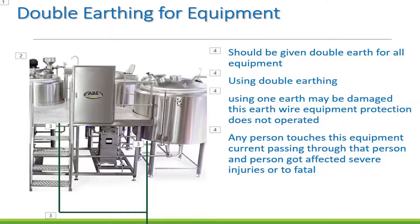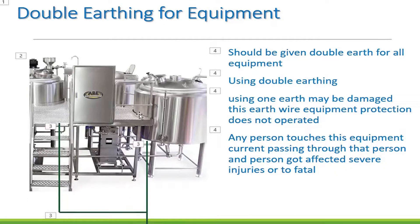This is why double earthing is required for all equipment. The metal parts of equipment are in the field where electrical current could flow. If a person touches the metal parts of equipment with a fault, the electrical current will flow through that person. That is why all metal-bodied equipment must be double-earthed.